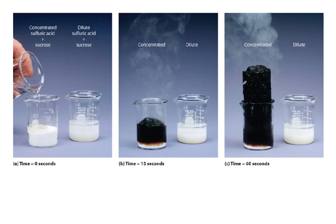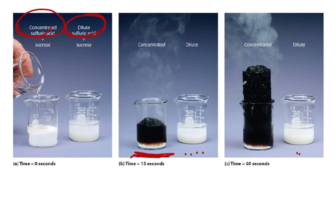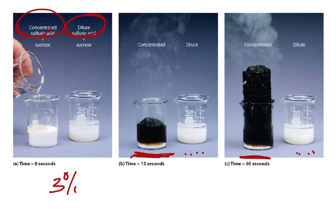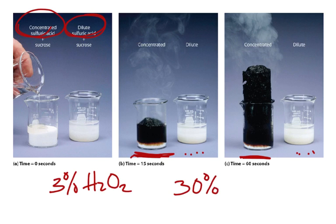In a quick demonstration here, we can see that if we have concentrated sulfuric acid versus dilute sulfuric acid and put them into some sugar — sucrose — the concentrated does a big reaction while the dilute is just sitting around. Even after a few minutes, the dilute is sitting around, but that concentrated sulfuric acid really made a big difference. Similarly, in class, if we use 3% peroxide, one thing happens, but when we use 30% peroxide, much more exciting things happen.